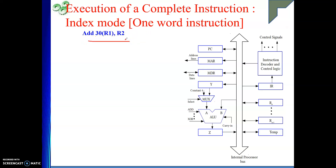This is an example of index mode. Here R2 is my destination and my source operand is in memory whose address is 30 plus content of register R1. In index mode, data is in memory whose address appears in the instruction not directly, but as a sum of two values: one is your offset, one is the content of the index register. Addition of these two gives us the address of the operand. At that address, our operand will be there. We will get that operand, add with R2, and the result will also be stored in R2.